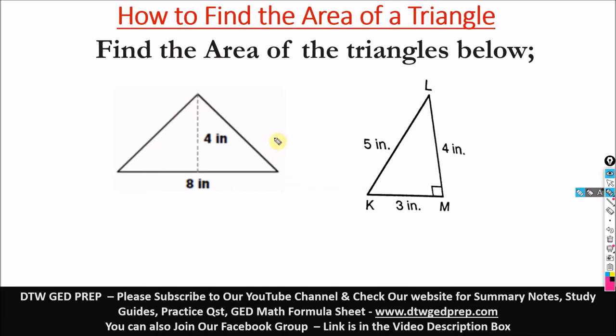It could be isosceles or equilateral, but we're not focused on the type of triangle here. I brought this in because this is a right angle triangle. We have two different shapes here, so I'm going to teach you how to find the area of both.